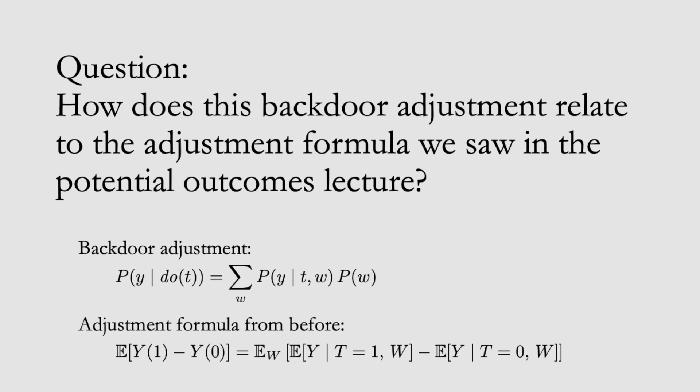With that, I'll pose the following question: how does the backdoor adjustment relate to the adjustment formula that we saw in the potential outcomes lecture in week 2? Here I list the backdoor adjustment and the adjustment formula for the ATE from the potential outcomes lecture. You can find the answer to this question in section 4.4.1 of the Introduction to Causal Inference coursebook.